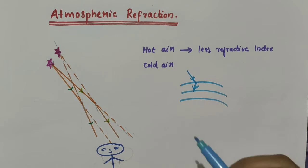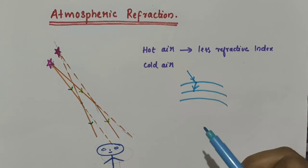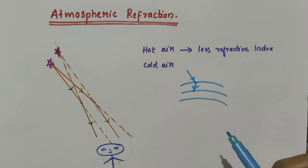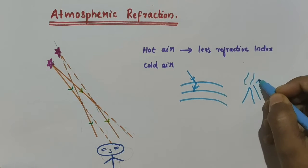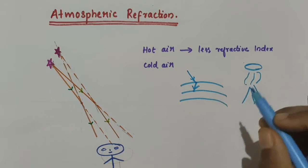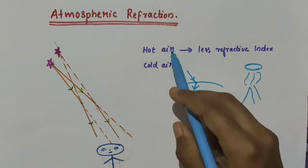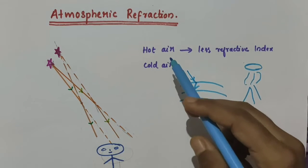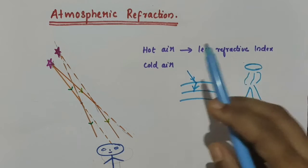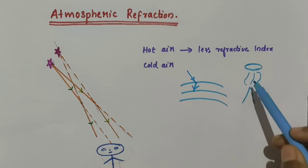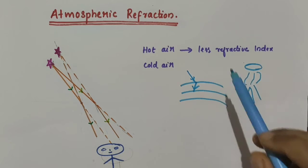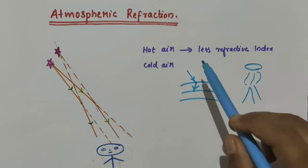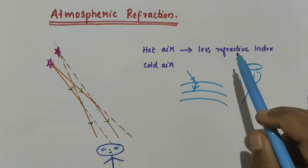You might have observed the wavering or flickering of objects when seen through a turbulent stream of hot air near the fire. That is actually due to atmospheric refraction. The air just above the fire is hotter than the air further up. Hot air is less dense, lighter, and has less refractive index than the cold air.